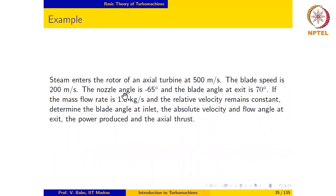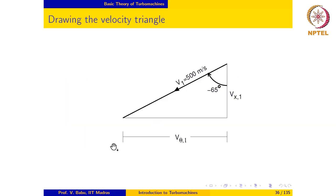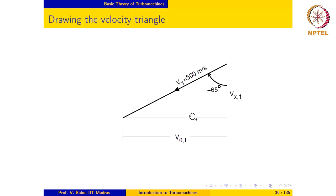We start by constructing the velocity triangle at the inlet and exit of this rotor. We begin with the absolute velocity vector, which has a magnitude of 500 meters per second and is oriented in a clockwise direction from the reference direction at an angle of 65 degrees — clockwise because the sign is given to be negative. The velocity triangle we draw will not be to scale but will be accurate qualitatively.